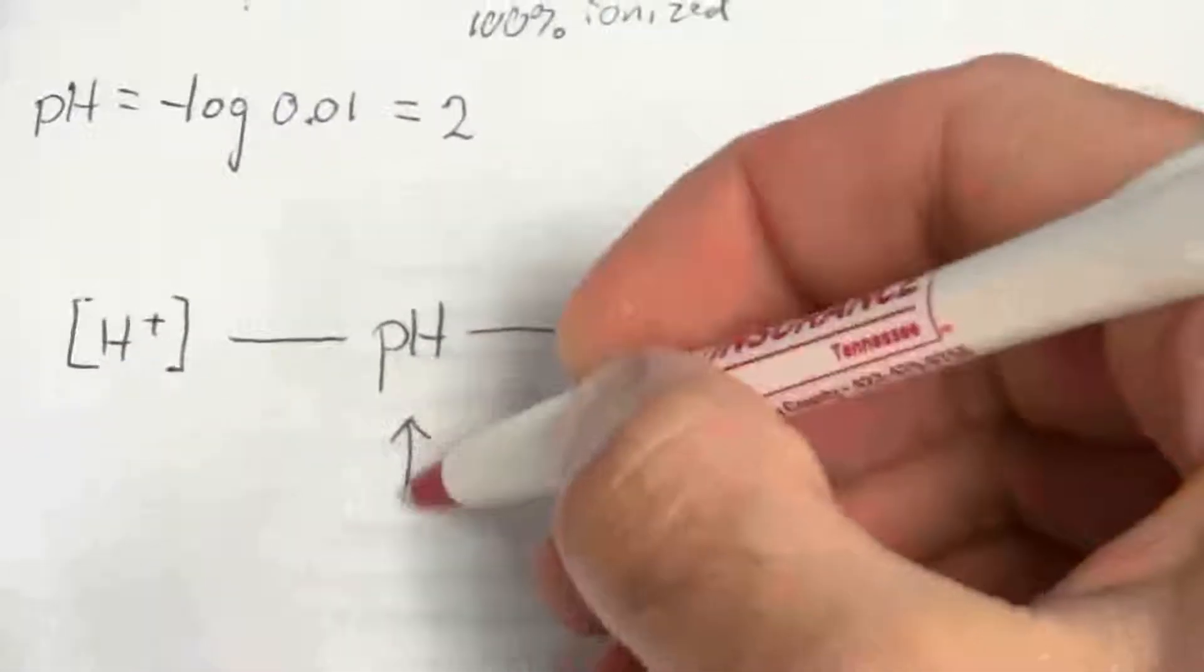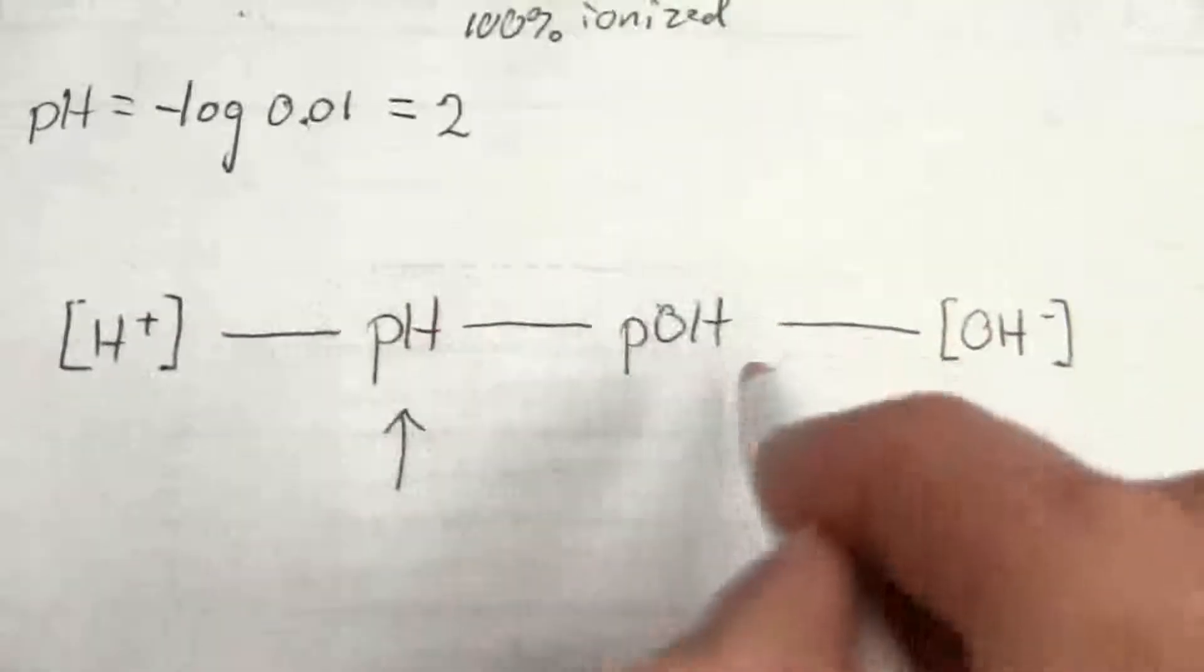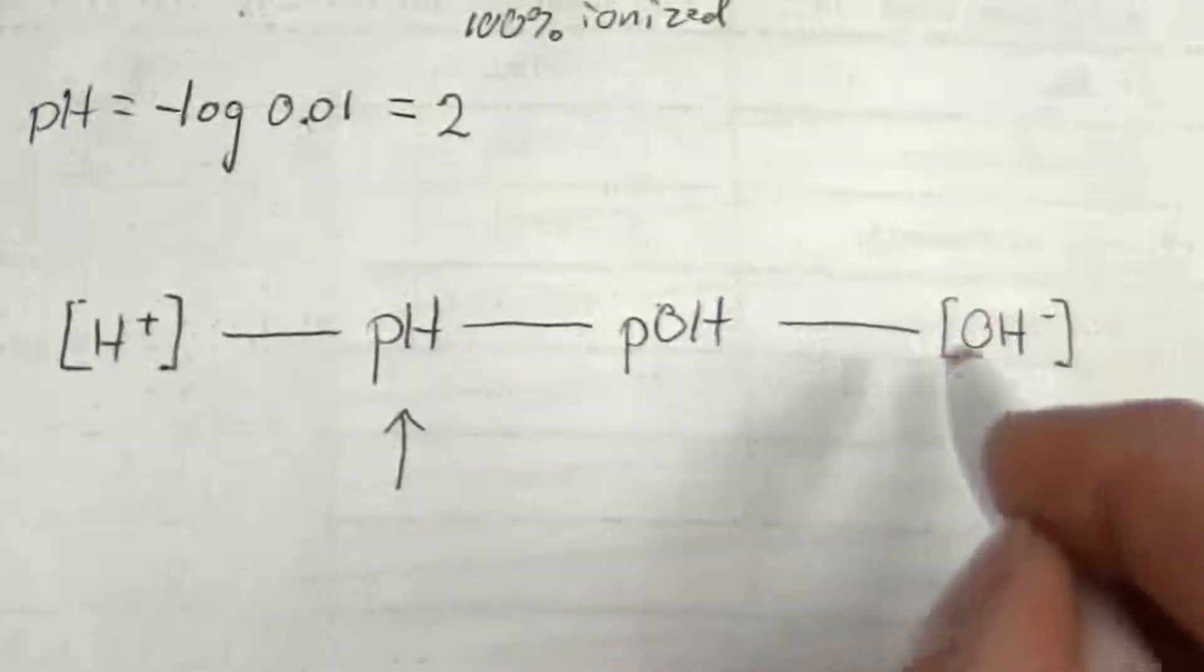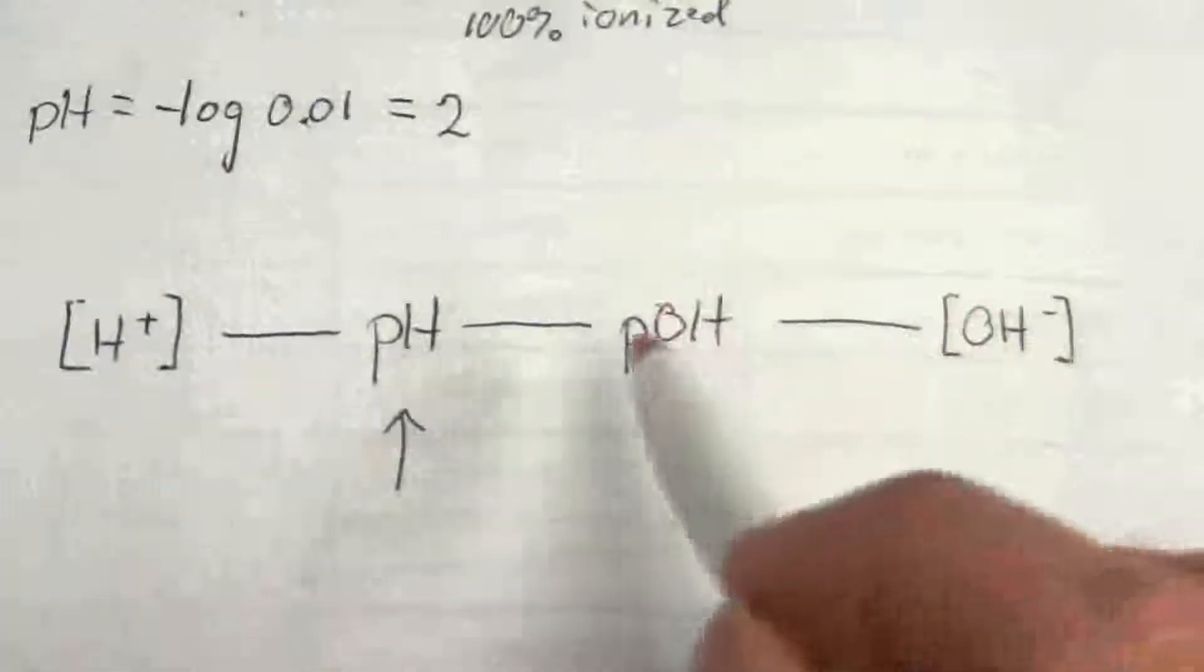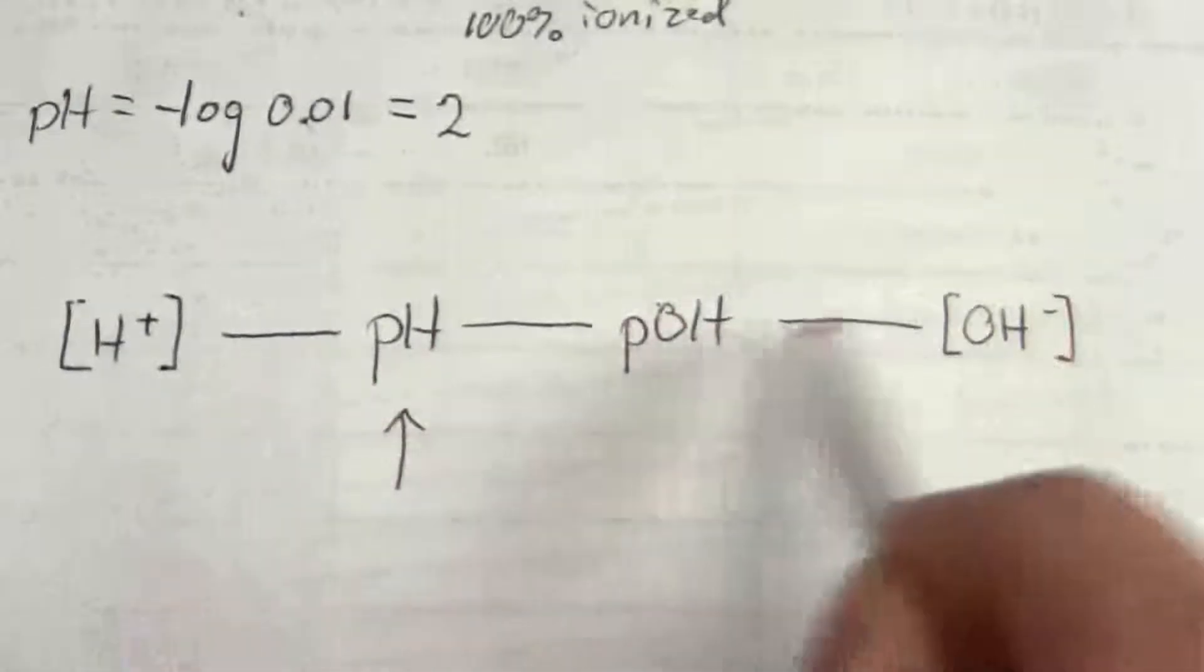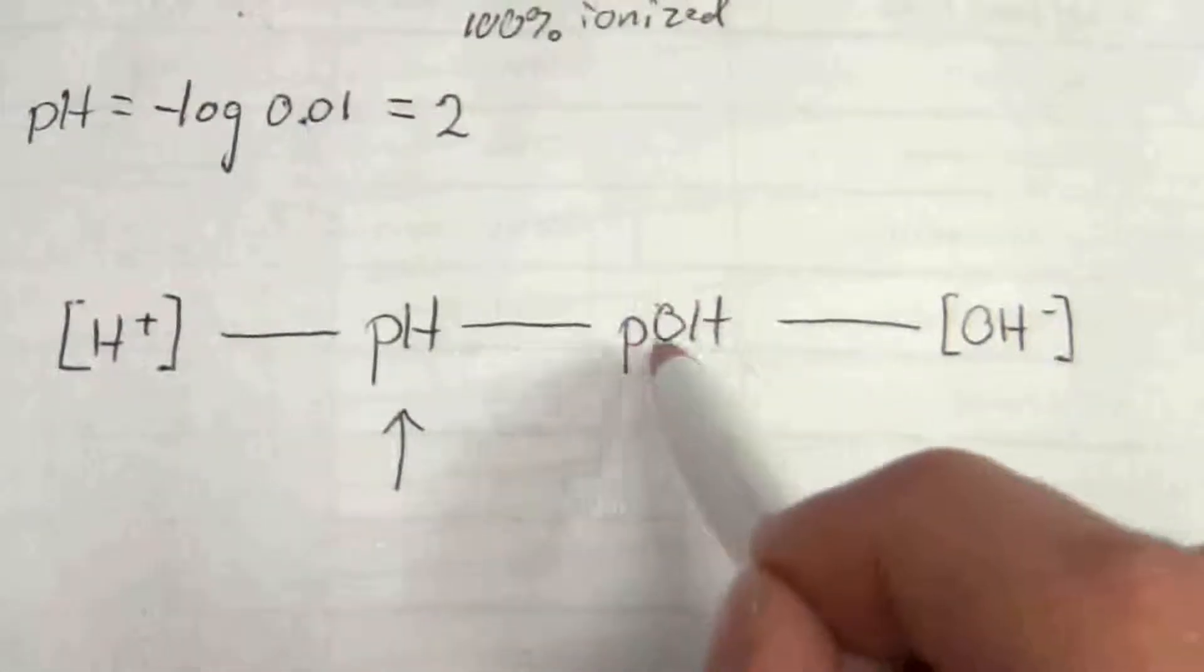So here it is. This is where we're starting. We have a pH. We want to find the hydroxide ion concentration. So first we're going to have to go to pOH, then we're going to have to find the hydroxide ion concentration from the pOH.